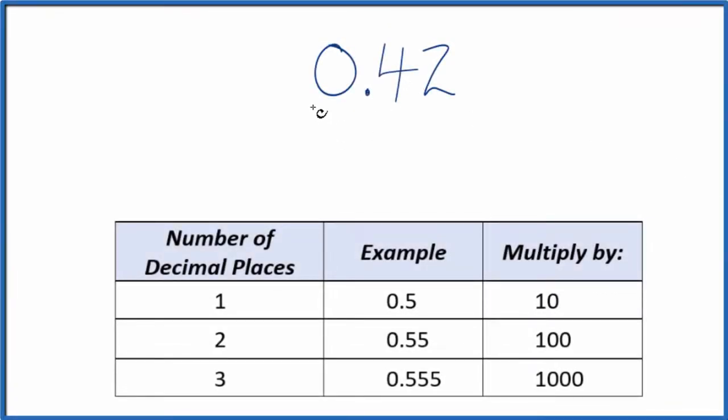Let's change the decimal 0.42 to a fraction. First, let's put 0.42 over 1. It's still 0.42, we're just dividing by 1, but now we have the start of a fraction.